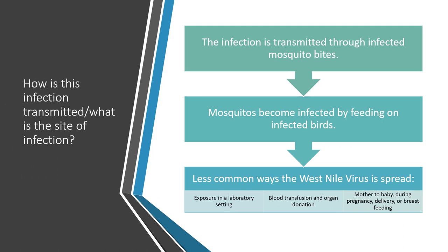How is this infection transmitted and what is the site of infection? The infection is transmitted through infected mosquito bites. Mosquitoes become infected by feeding on infected birds. Less common ways the West Nile Virus is spread include exposure in a laboratory setting, blood transfusion and organ donation, and mother to baby during pregnancy, delivery, or breastfeeding.